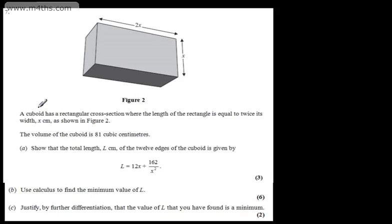This is question number 7. We're told a cuboid has a rectangular cross-section where the length of the rectangle is equal to twice its width, x centimeters, as shown in figure 2. The volume of the cuboid is 81 cubic centimeters.